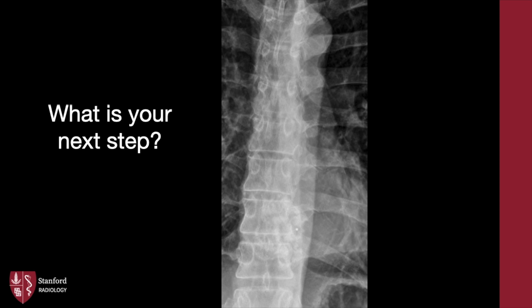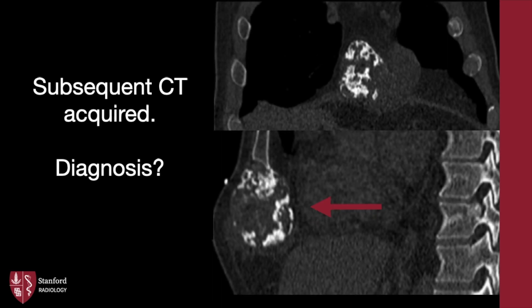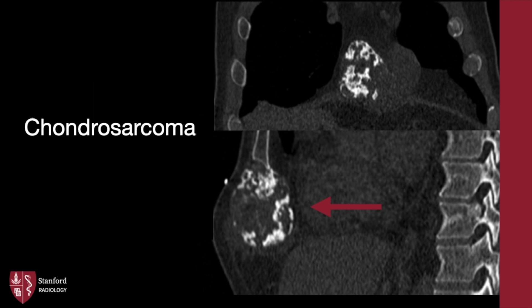How about this case? There is an ill-defined density overlying the left aspect of a thoracic vertebral body where there is a radiopaque BB marker. The lateral view shows the ill-defined density in the xiphoid process. CT again saves the day — similar to the last case, this is a chondrosarcoma with a similar expansile nature and chondroid matrix. Definitely don't mistake these for just costochondral calcifications.